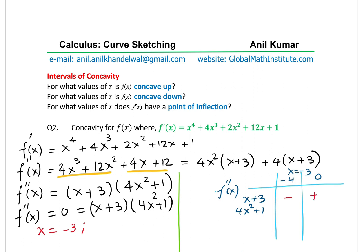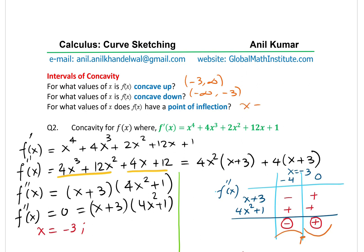For x = -4, (x + 3) is negative, while (4x² + 1) is always positive. Multiplying gives a negative result on the left and positive on the right. So the graph is concave down on (-∞, -3) and concave up on (-3, ∞), giving a point of inflection at x = -3.